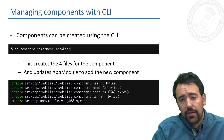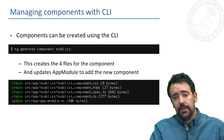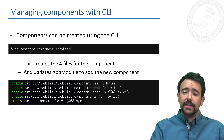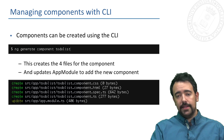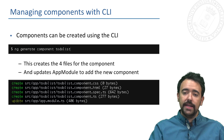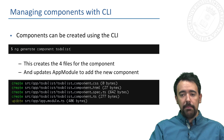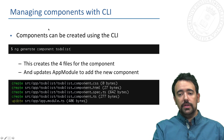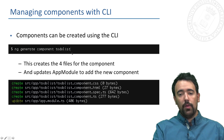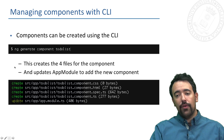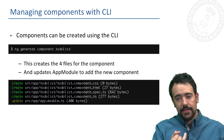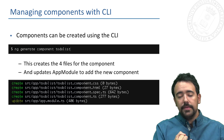The last thing we are going to see in this video is how to manage components using the CLI tool. When we want to create a new component in our application we simply execute the command ng generate component followed by the name of the component. This will create the four files we need: the style file, the HTML file, the testing file, and the logic file.